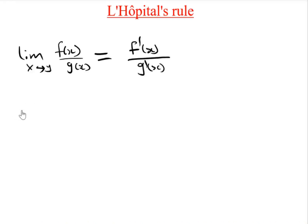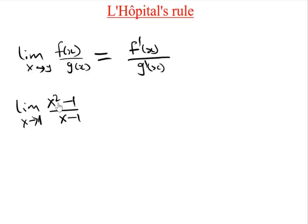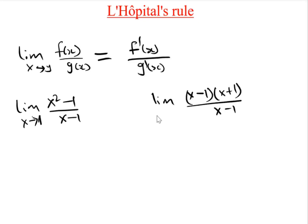Taking this example, we have the limit as x approaches 1 of (x² - 1) divided by (x - 1). Based on what we know, we solve this using direct substitution. We split the numerator using the difference of two squares, giving us (x - 1)(x + 1) divided by (x - 1). As x tends to 1, the (x - 1) terms cancel.